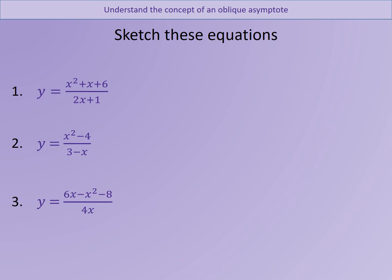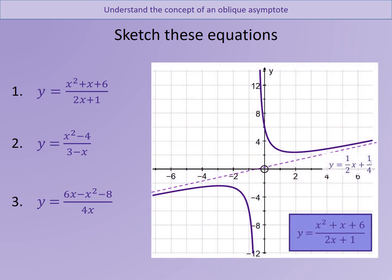Let's have a look at question one. You can see your oblique asymptote should have been a half x plus a quarter. If you did it all correctly, you've got some intersection points — it looks like it's at 6. That is the only intersection point in this case because the numerator doesn't have any real solutions, so therefore it doesn't cross. We do have an asymptote at minus a half, and there's the other asymptote.